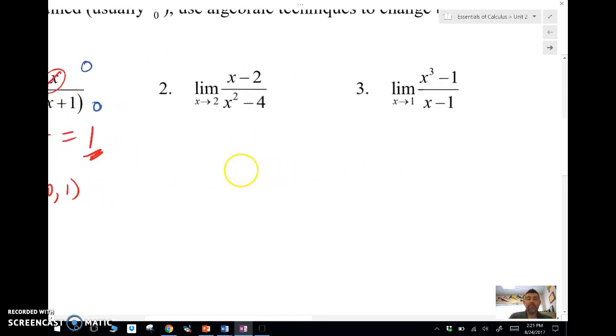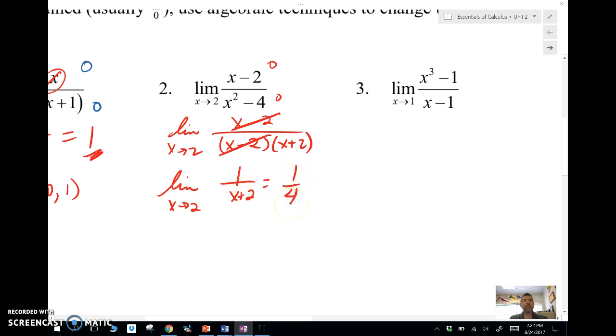Let's take a look at number two. Notice here we plug in two. We get two minus two, which is zero, four minus two, which is zero. Zero over zero is indeterminate. So what am I going to do? I'm going to do something. I'm going to factor. Yes, the big F word of math, factor. So this time we're going to factor and reduce that down and we're going to have limit as X approaches two of one over X plus two, and that's going to be one fourth.